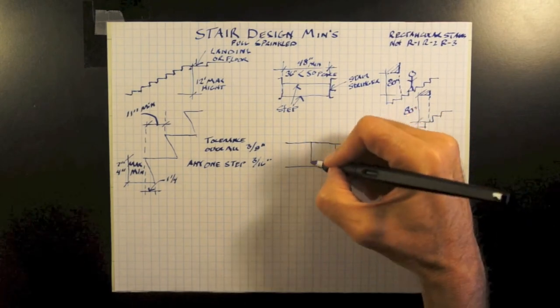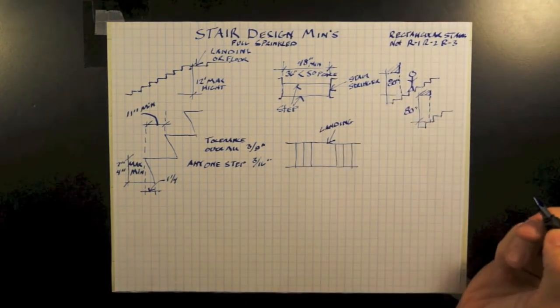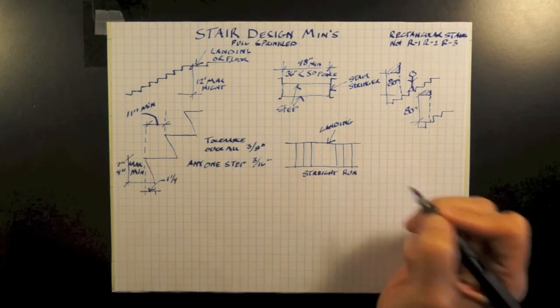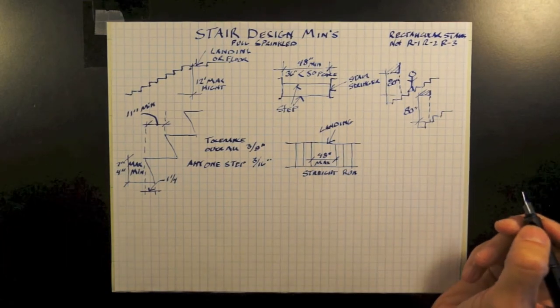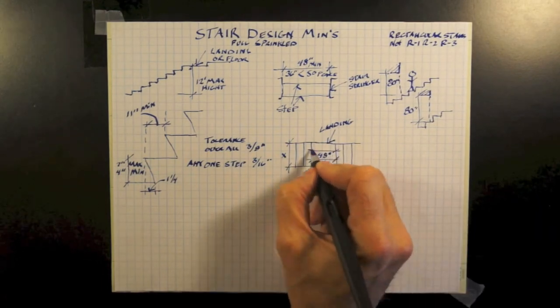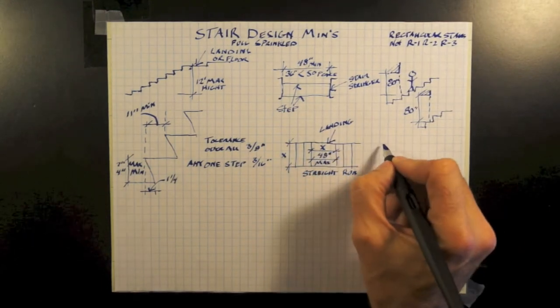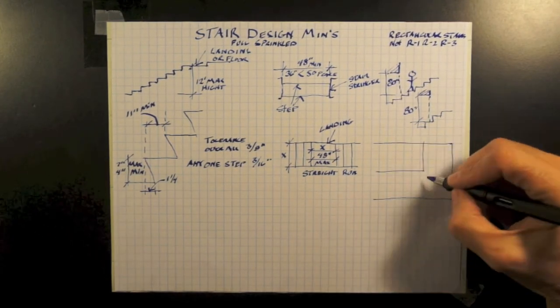Now this is addressing a straight run of a stair only. On a straight run of a stair, your max landing is required to be only 48 inches. So therefore, if your width of your stair is 48, your max landing has to be 48. If your width of your stair is 52, you're still only required to have a max length of a landing of 48 inches.